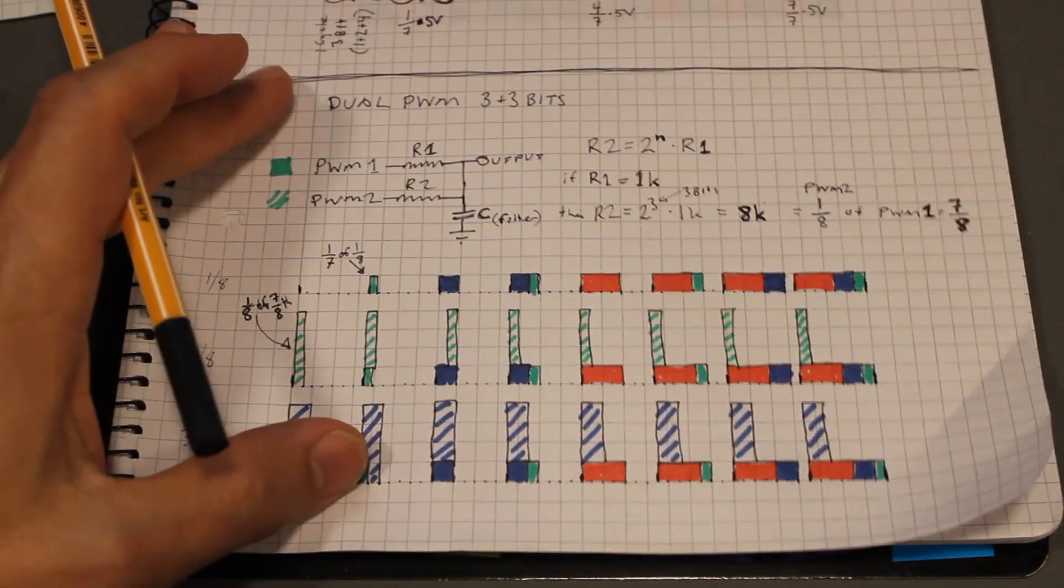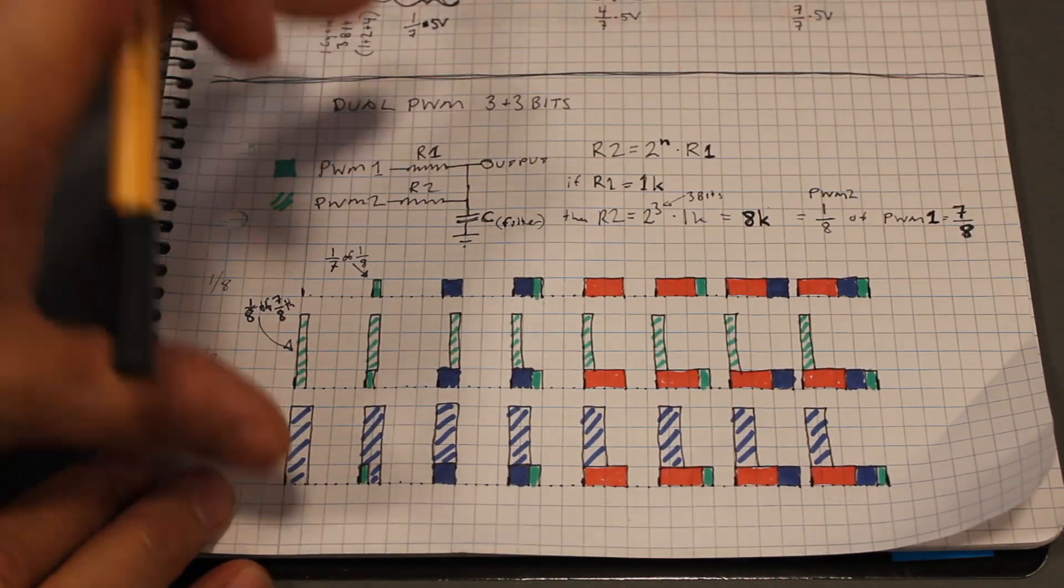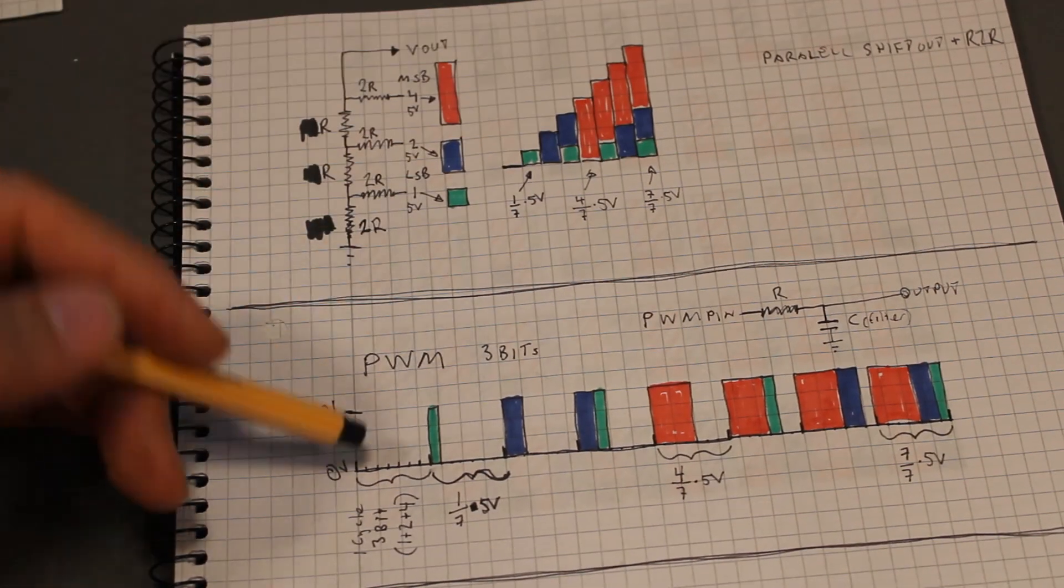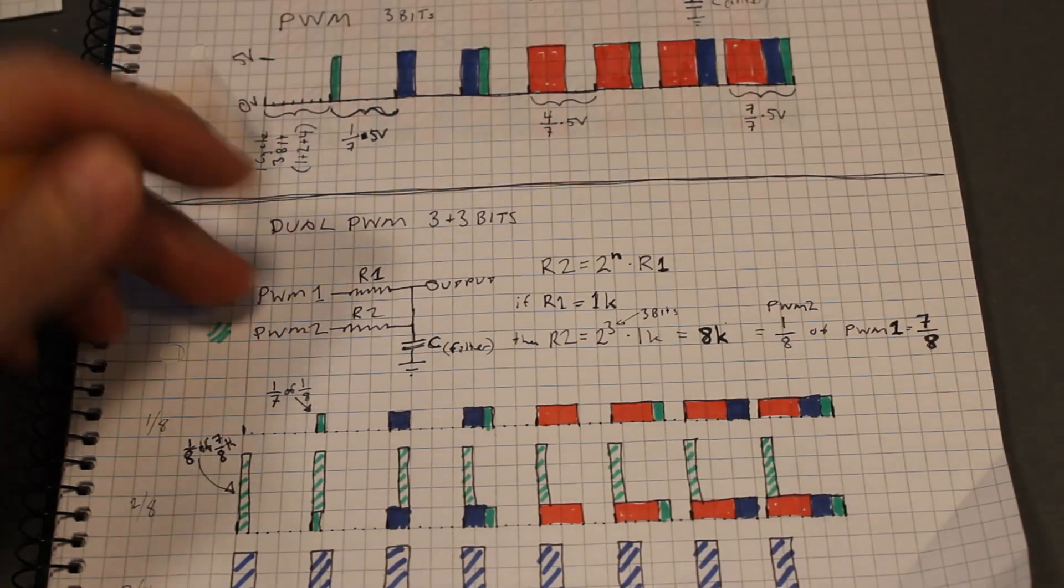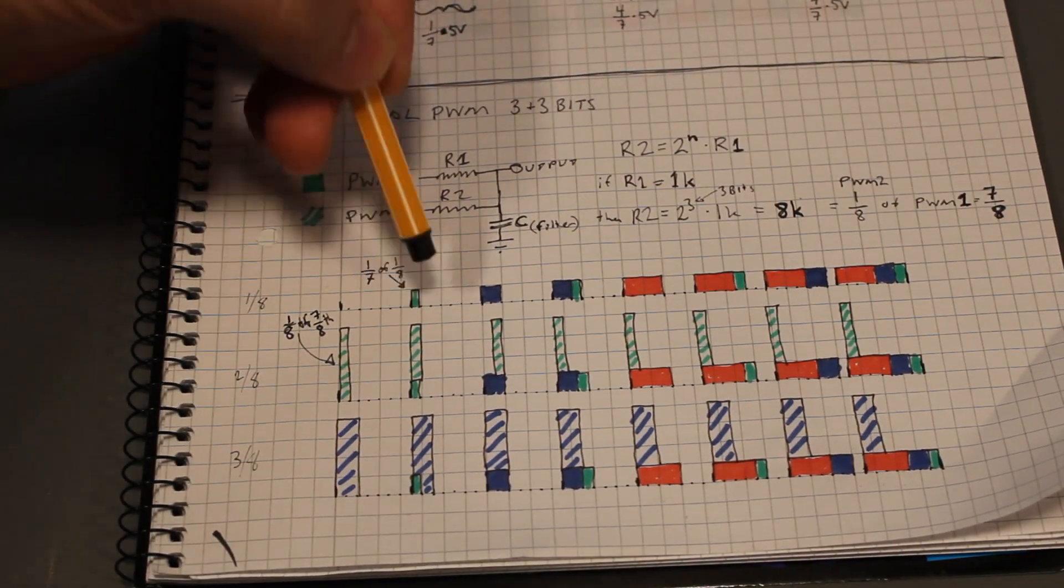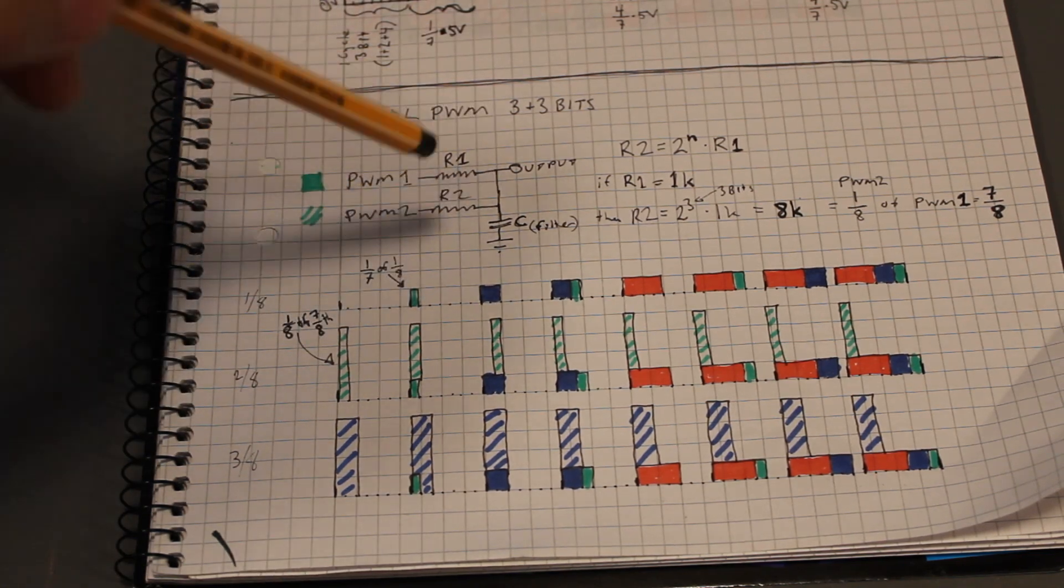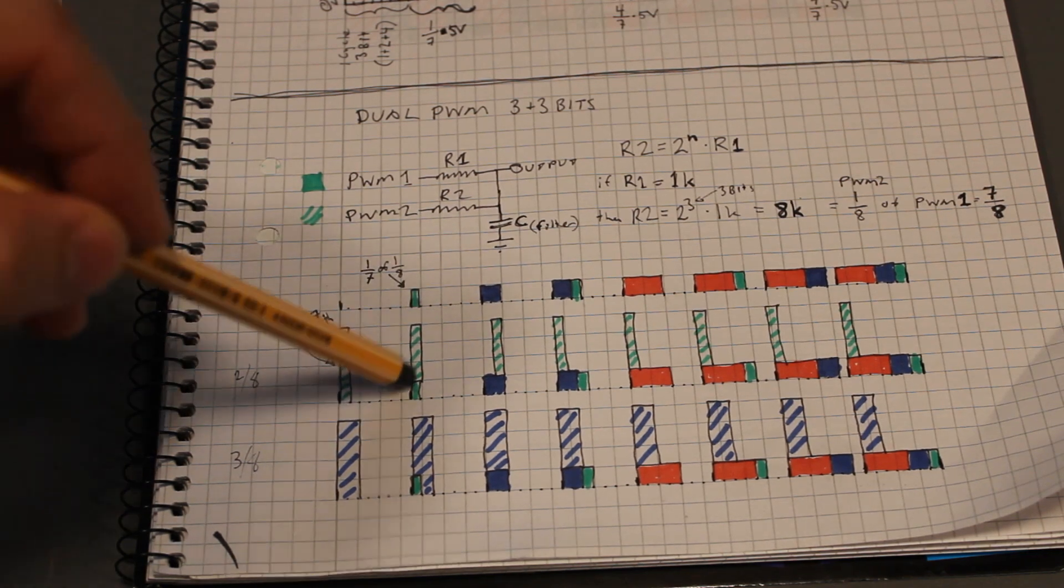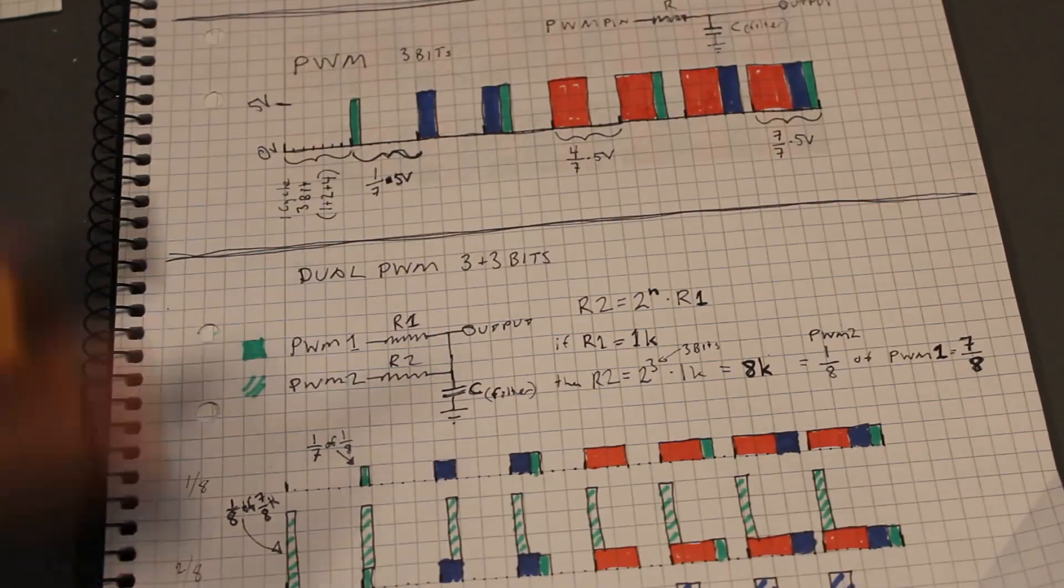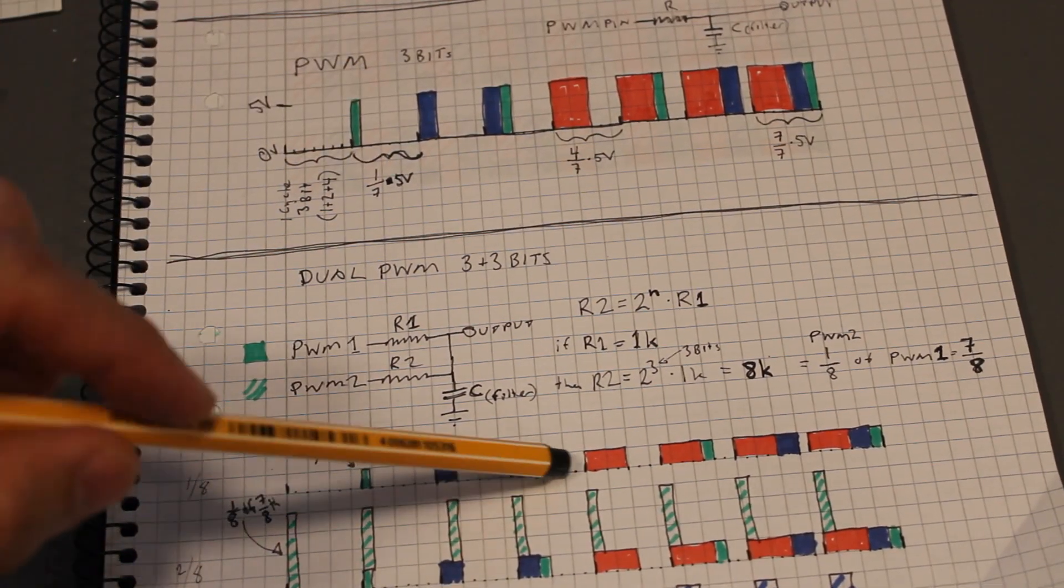Finally we come down here to dual PWM, and what we do here is actually a combination of these two. We have two PWM signals, the least significant bits in plural this time and most significant bits.